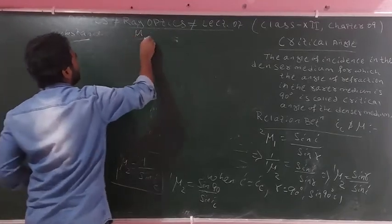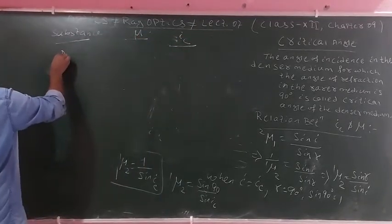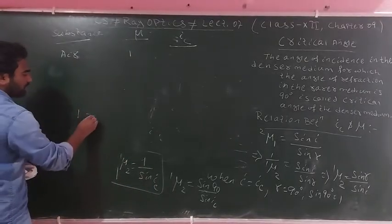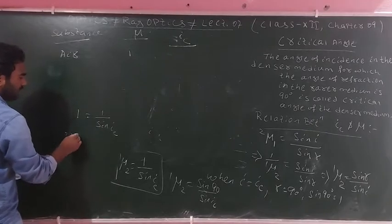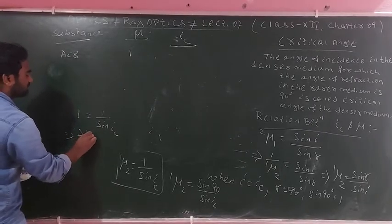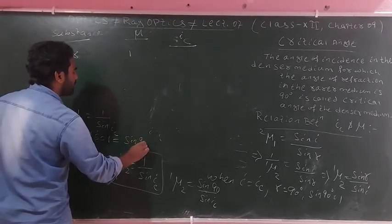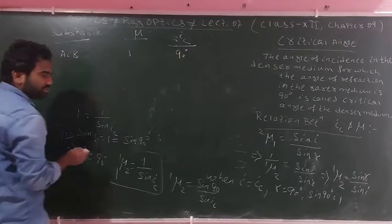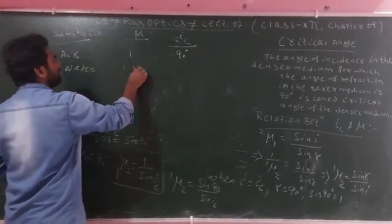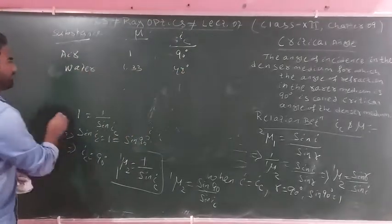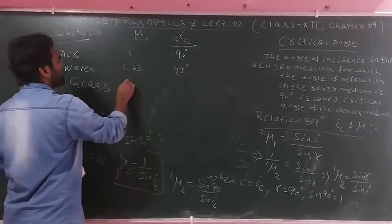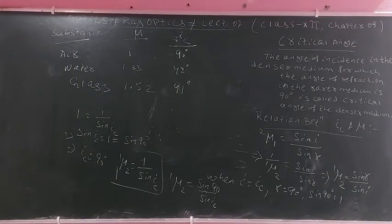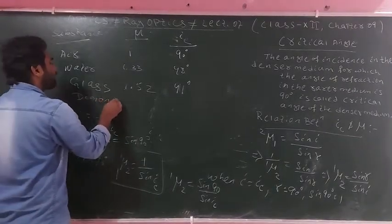Using the formula mu equals 1 by sin Ic: for air, the refractive index is 1, so sin Ic equals 1, giving a critical angle of 90 degrees. For water, the refractive index is 1.33, giving a critical angle of approximately 48 degrees. For glass, the refractive index is 1.52, giving a critical angle of approximately 41 degrees.